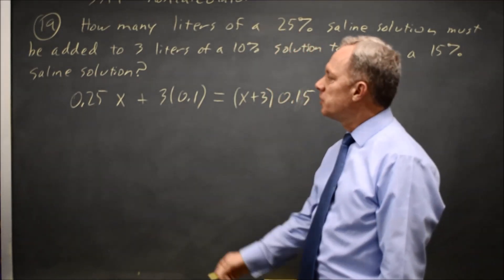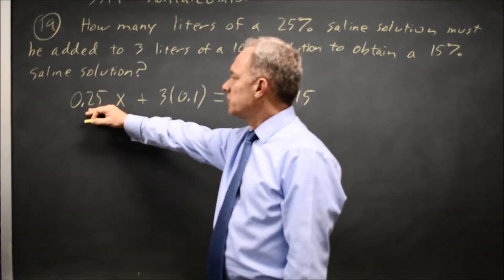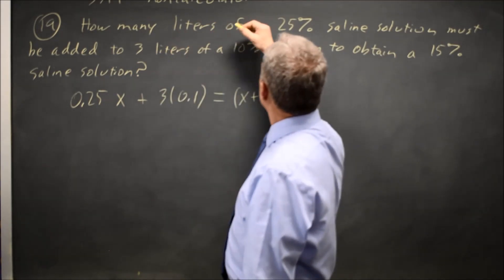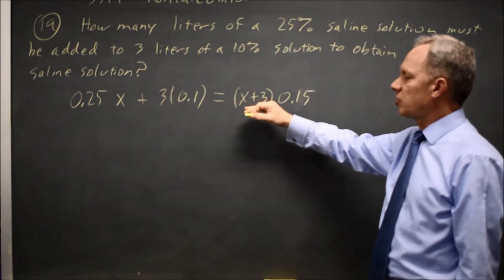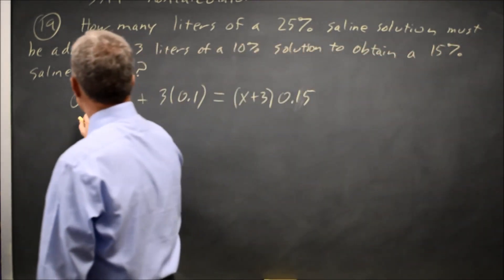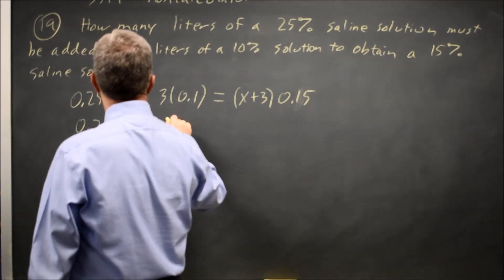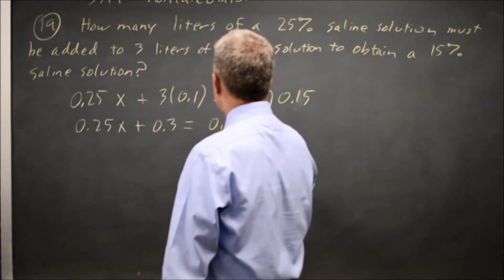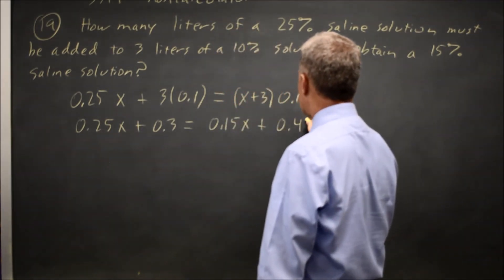This gives me an equation for the total amount of the material dissolved in the 25% solution plus in the 10% solution, and that's the total amount dissolved in the 15% solution. So this is 0.25x plus 0.3 equals 0.15x plus 3 times 0.15 is 0.45.